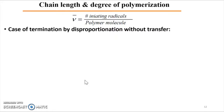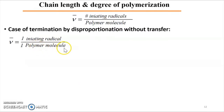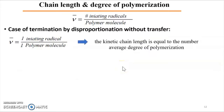Starting with the case without transfer: in termination by disproportionation, each initiating radical — or each propagating chain — yields one polymer molecule. Therefore, in this case, the kinetic chain length is equal to the number-average degree of polymerization: the kinetic chain length equals Xn.